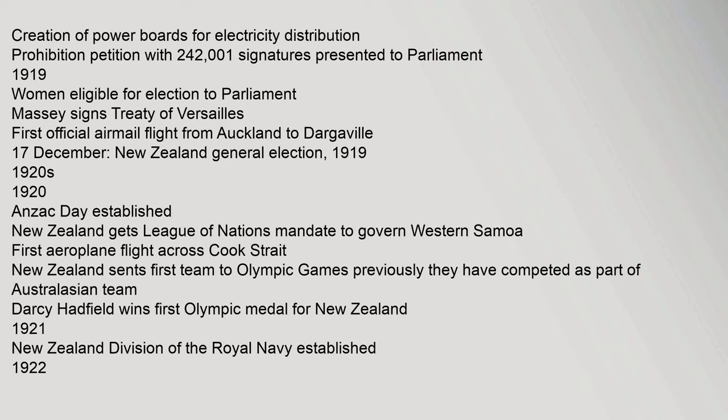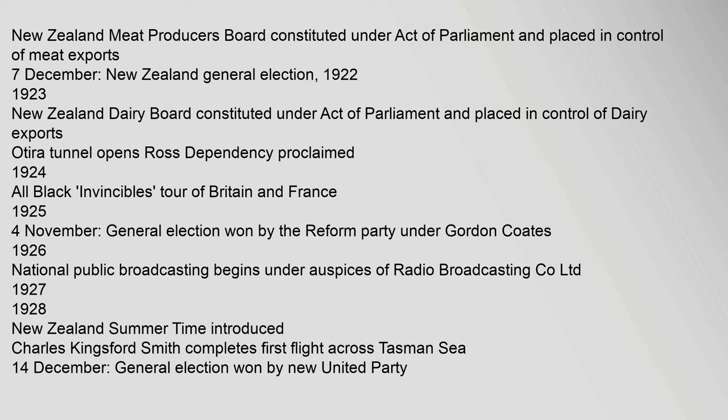Darcy Hadfield wins first Olympic medal for New Zealand. 1921: New Zealand Division of the Royal Navy established. 1922: New Zealand Meat Producers Board constituted under Act of Parliament and placed in control of meat exports. 7 December: New Zealand general election. 1922–1923: New Zealand Dairy Board constituted under Act of Parliament and placed in control of dairy exports. Otira Tunnel opens. Ross Dependency proclaimed. 1924: All Blacks Tour of Britain and France.